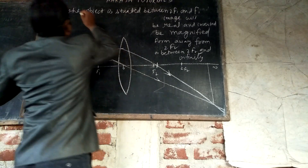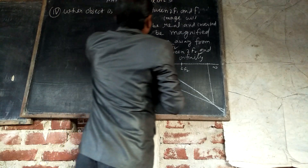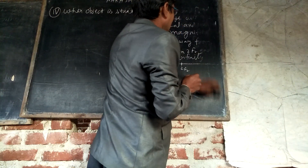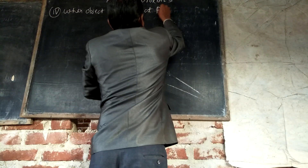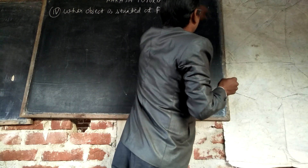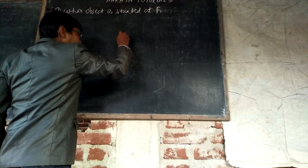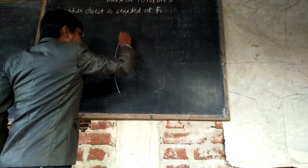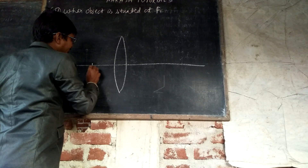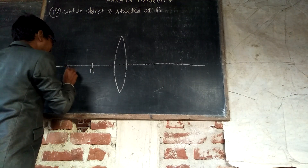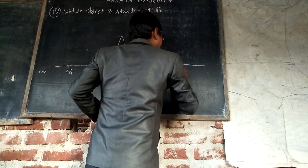Now let us discuss the fifth case: when the object is situated at F₁. Let us draw a convex lens with positions F₁, 2F₁, F₂, 2F₂, and infinity marked. Our object is at F₁.